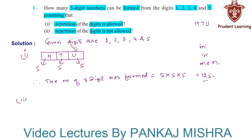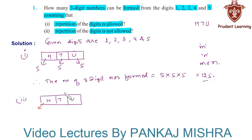Hence when repetition of digits is allowed, the number of three-digit numbers that can be formed is 125. In the next section, repetition of the digits is not allowed. Again, let us draw three boxes each for units place, tens place and hundreds place. The hundreds place can be occupied by any one of the five digits in five different ways. Since repetition is not allowed and one digit has already occupied the hundreds place, the tens place can be occupied by any one of the remaining four digits in four different ways.